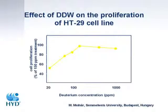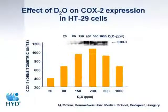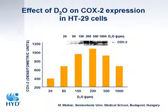I have shown you that in vitro, the lower the deuterium concentration, the bigger the inhibitory effect. But the real question was whether we can modify the expression of the COX2 gene. It is well known that the COX2 gene has a key role in tumor development — it is responsible for the enzyme which synthesizes prostaglandin.